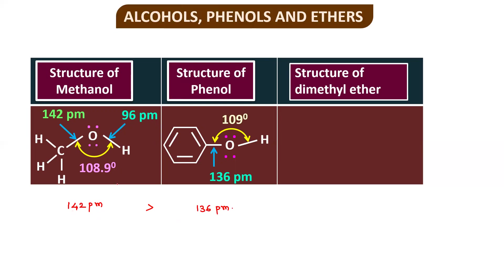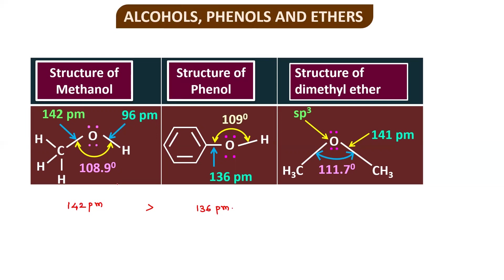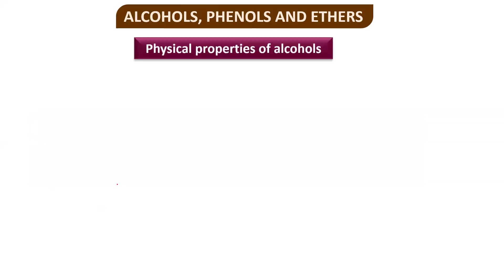For dimethyl ether, the central oxygen is sp3 hybridized. The bond length of the carbon-oxygen bond is 141 picometers and the bond angle is 111.7 degrees. Now let's look at the physical properties of alcohols.